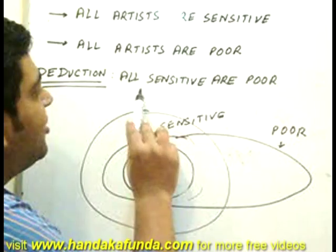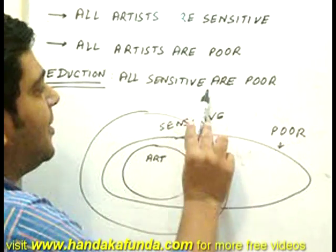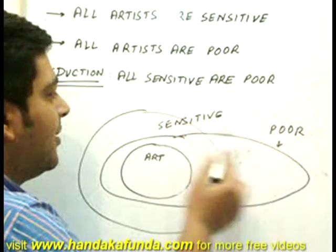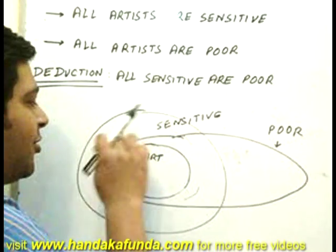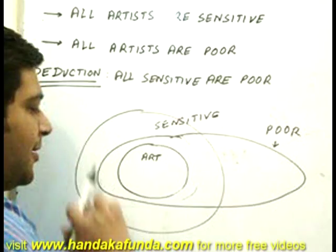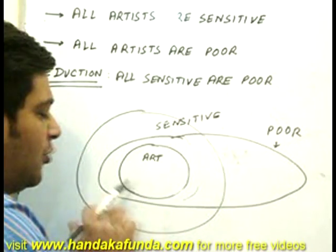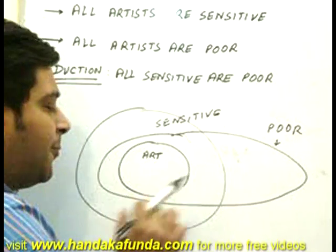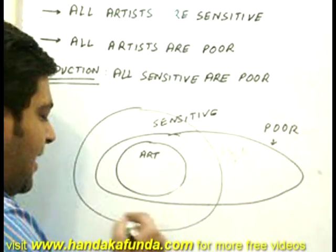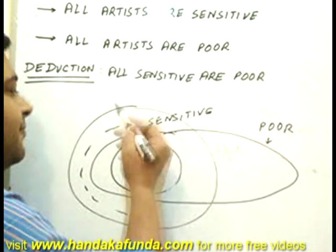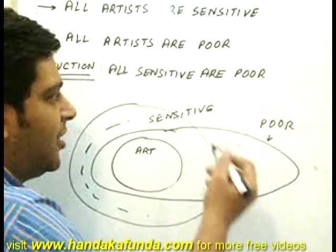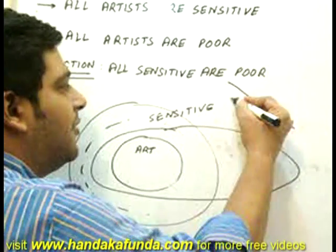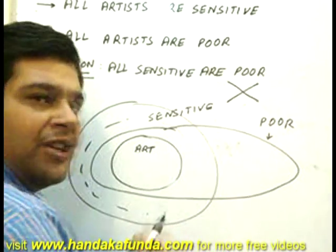Now let's look at the deduction: all sensitive are poor. As you can clearly see, there are a lot of sensitive people who are not poor, which lie in this region. Therefore this deduction is an invalid deduction.